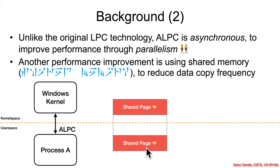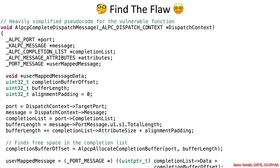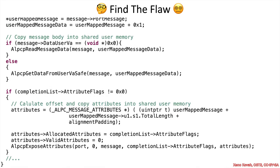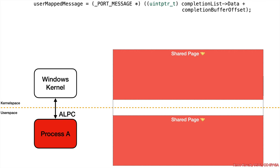That shared page allows you to write data in there and have it immediately available down in user space. The original researcher helpfully provided some basic pseudocode — heavily simplified but much nicer to read than raw disassembly. Go take a look at this pseudocode and see if you can find the flaw for the race condition section.